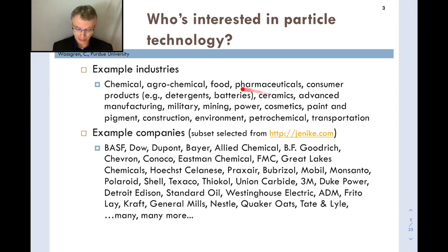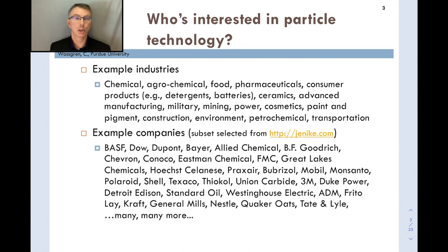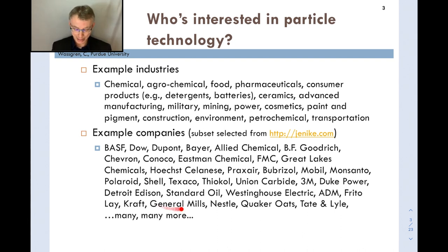There are a wide range of example companies in this field. This list is perhaps a little older — for example, Dow and DuPont have since merged and split. The point is that many large and small companies deal with particulate materials. This list came from Jenike and Johansson, a consulting company that deals with particulate handling issues and has a lot of good information on their website.